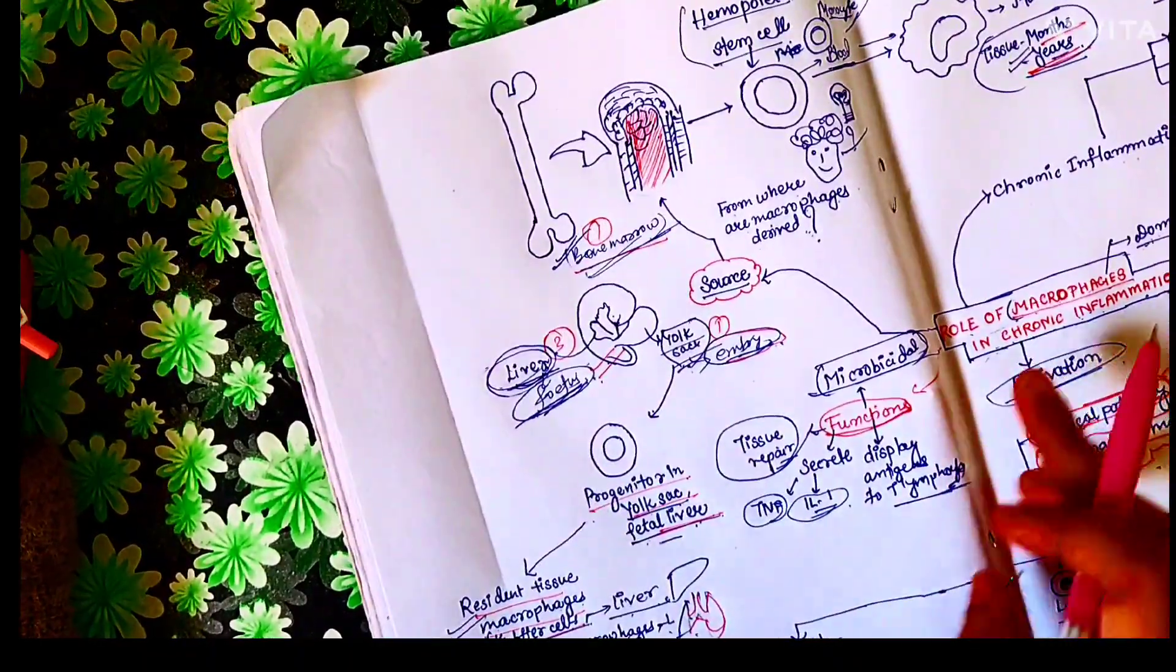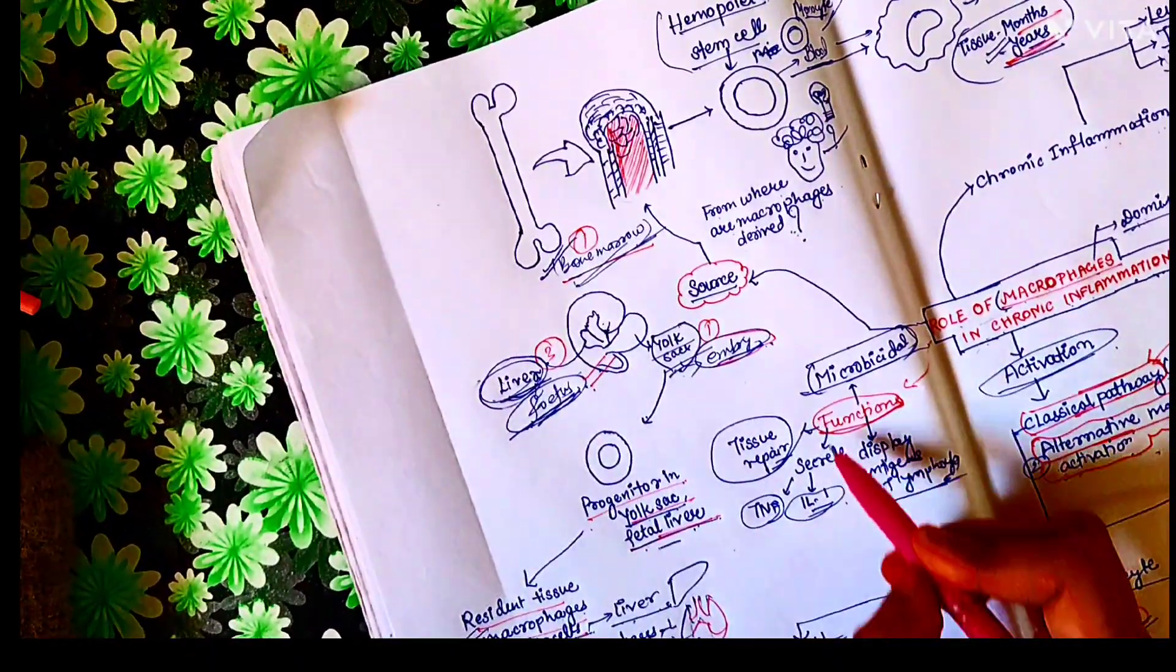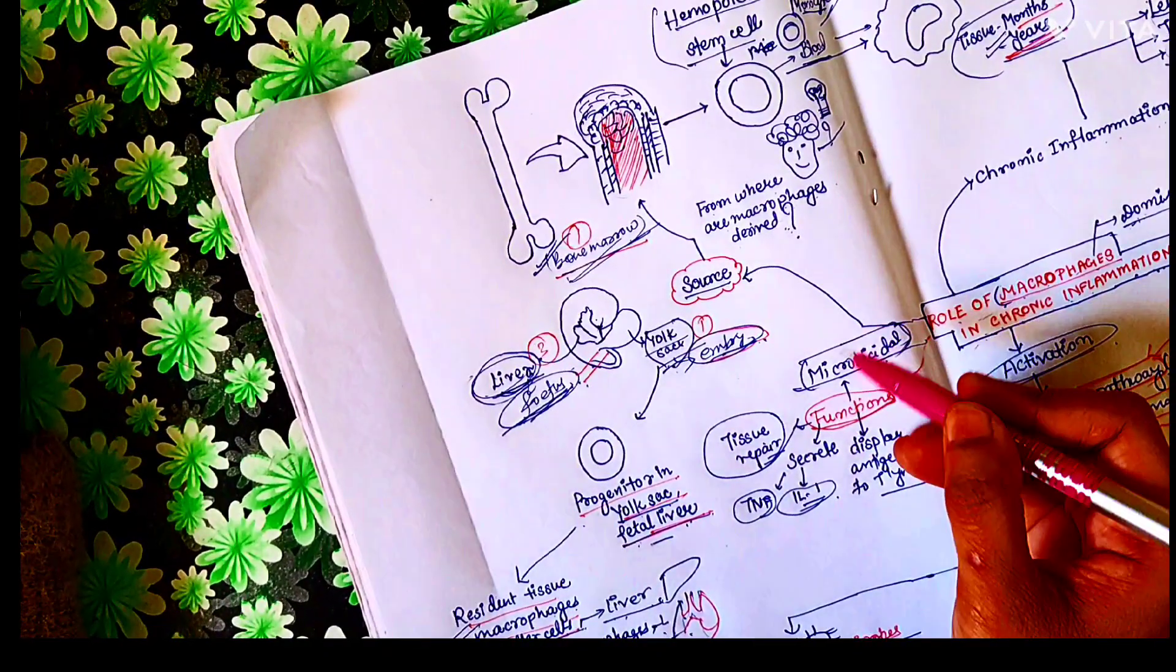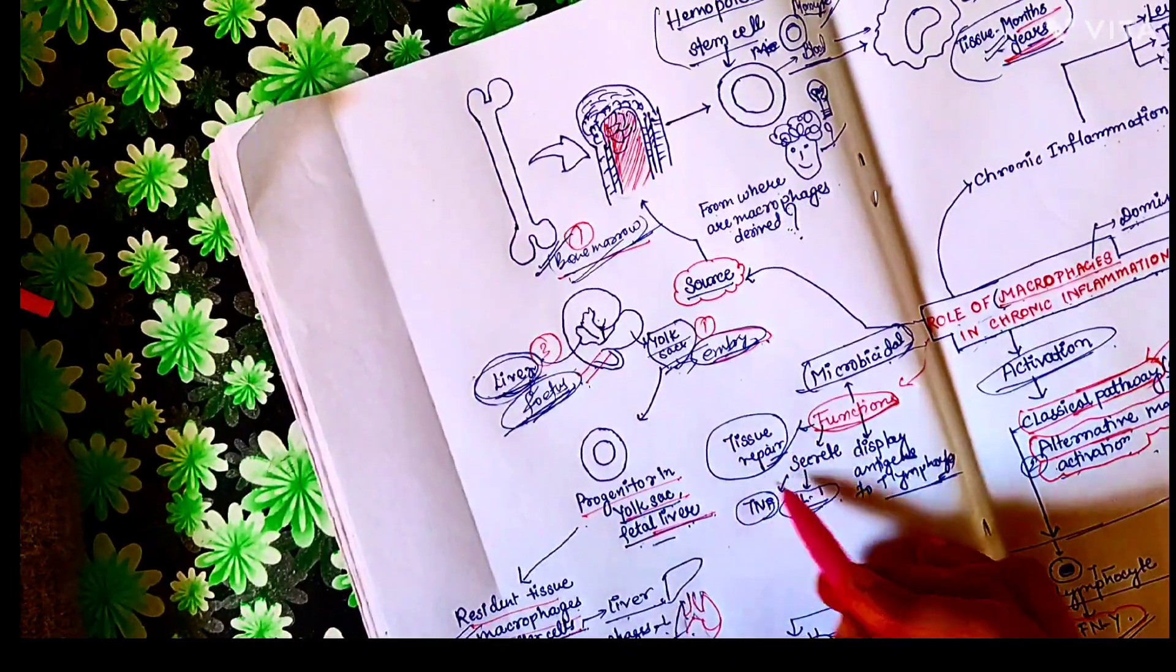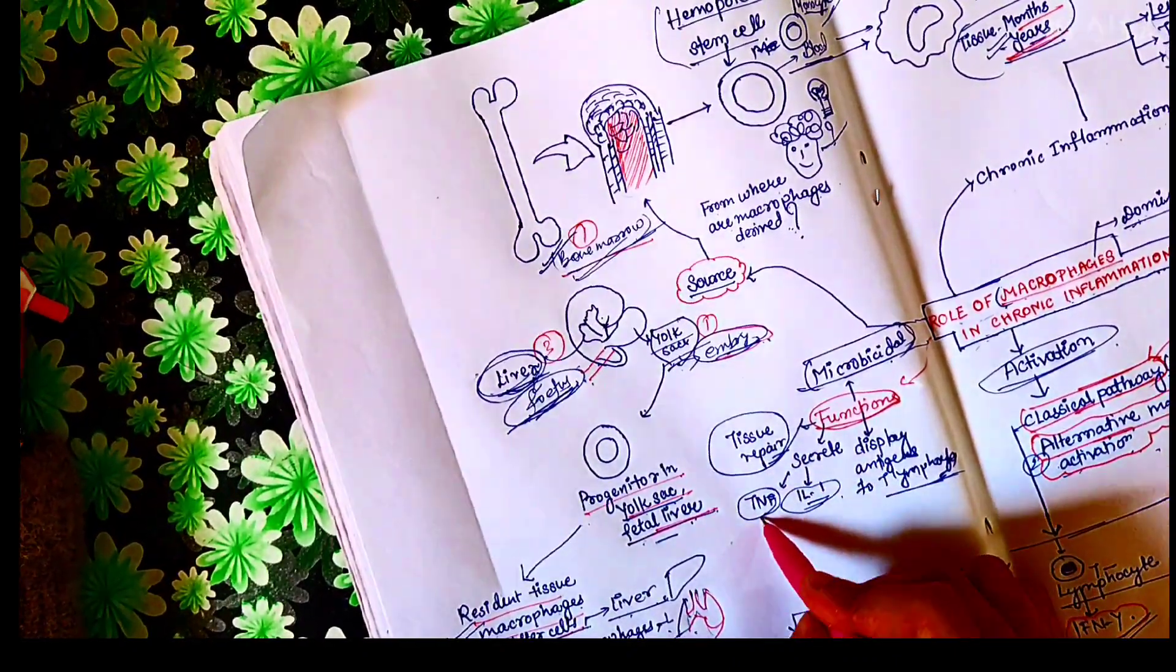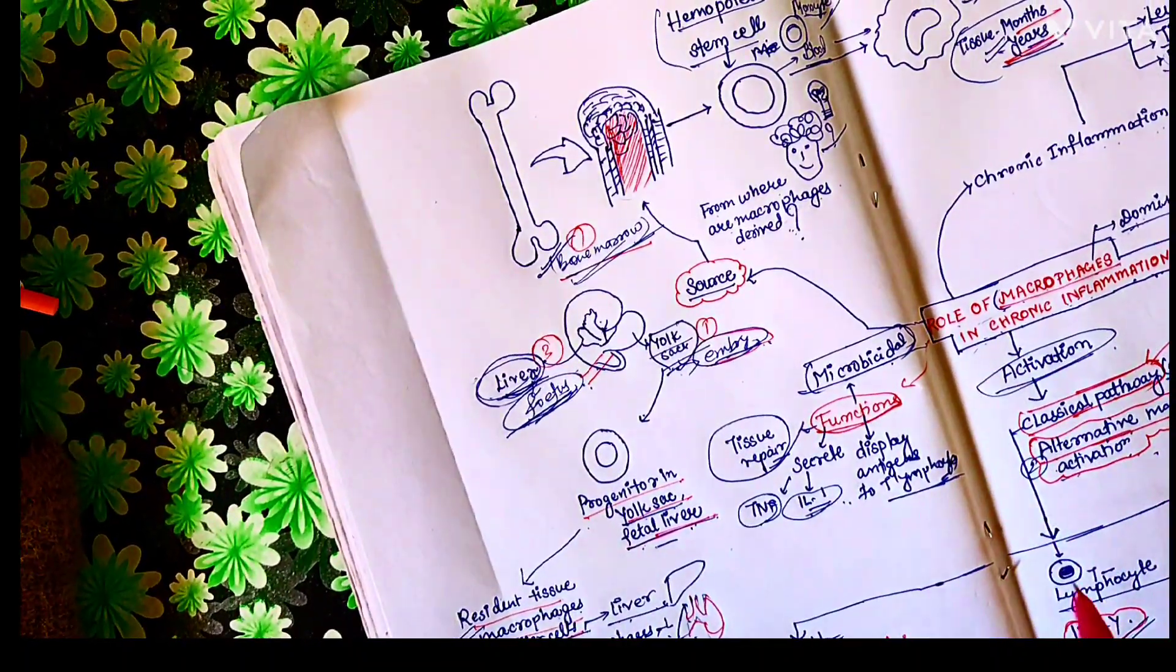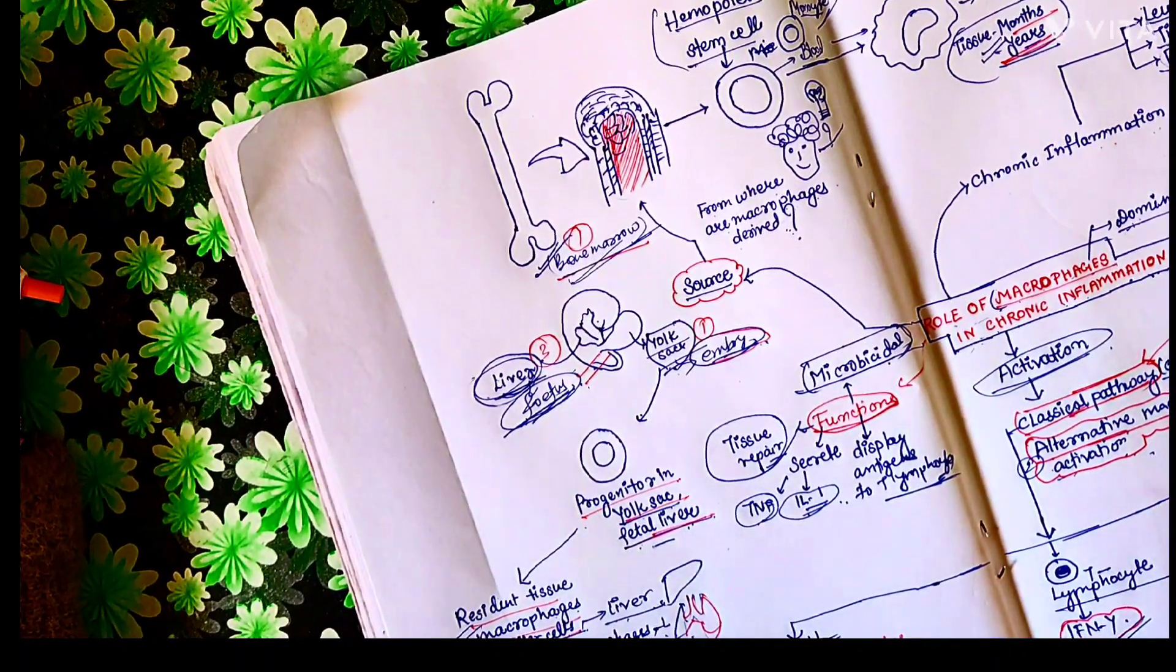So what are the functions of macrophages? Macrophages are microbicidal. They are called professional phagocytes also. They have a role in tissue repair. They secrete cytokines like tumor necrosis factor and interleukin-1. And they present antigens from bacteria or from foreign substances to T lymphocytes.